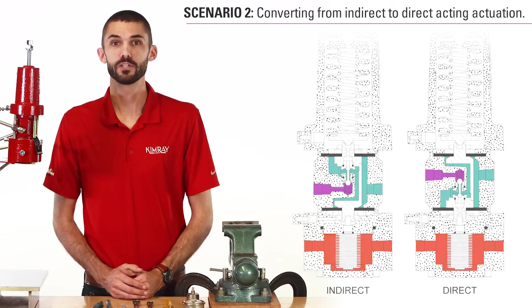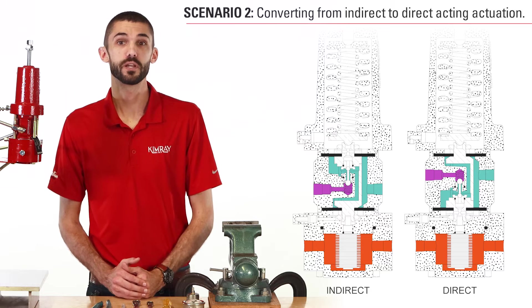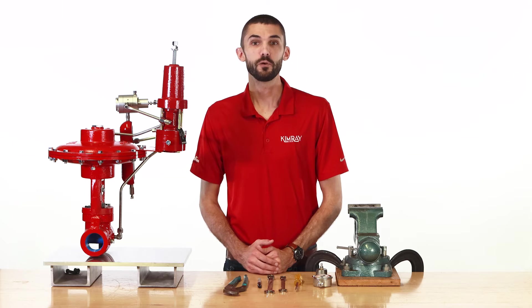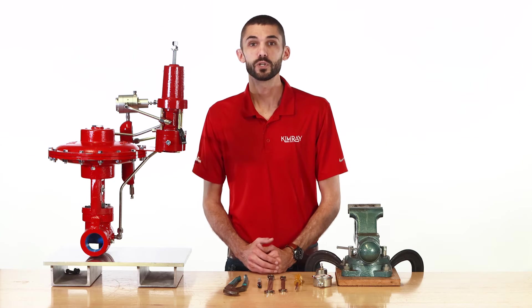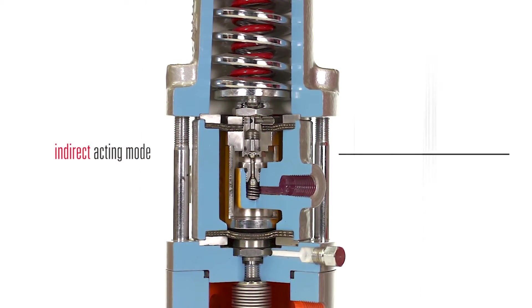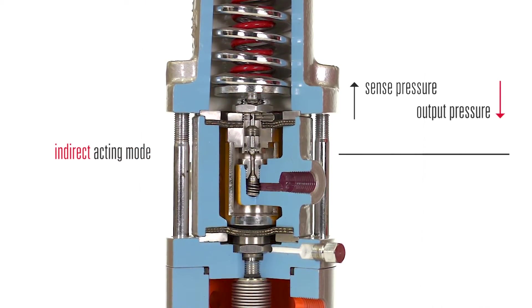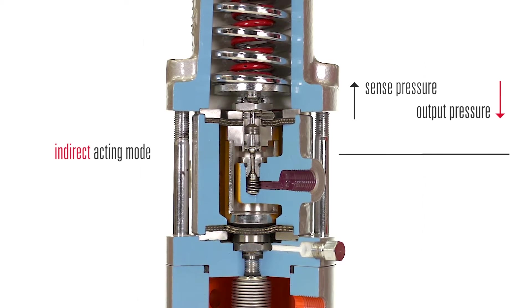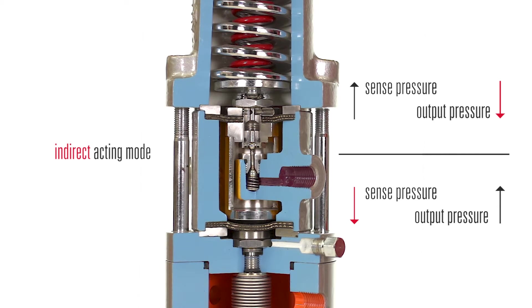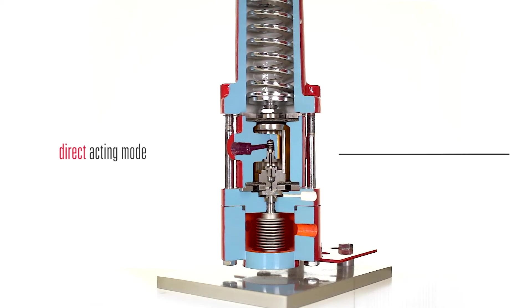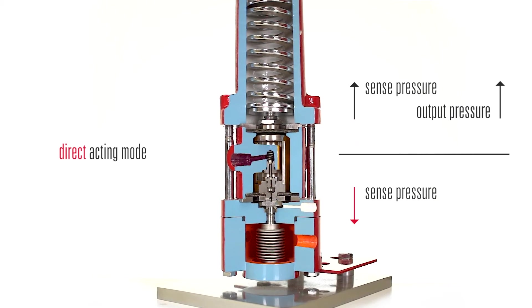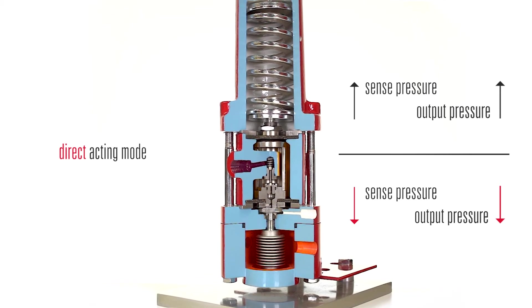Another way that the pressure pilot is modular is that it can be configured for indirect or direct acting actuation. The standard setup for a back pressure valve's fail position is fail open which would mean that the pressure pilot would be indirect acting. When it's in indirect mode an increase in sense pressure will decrease the output pressure to the valve while a decrease in sense pressure will increase the output to the valve. In direct acting mode an increase in sense pressure will increase the output pressure to the valve while a decrease in sense pressure will decrease the output to the valve.